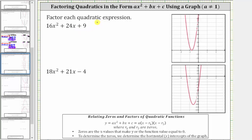Where if we have y equals ax squared plus bx plus c, we can write this in the form of a times the quantity x minus r sub one times the quantity x minus r sub two, where r sub one and r sub two are the zeros of the function — the x values that make the y or function value equal to zero — which means to find the zeros, we determine the horizontal intercepts of the graph.